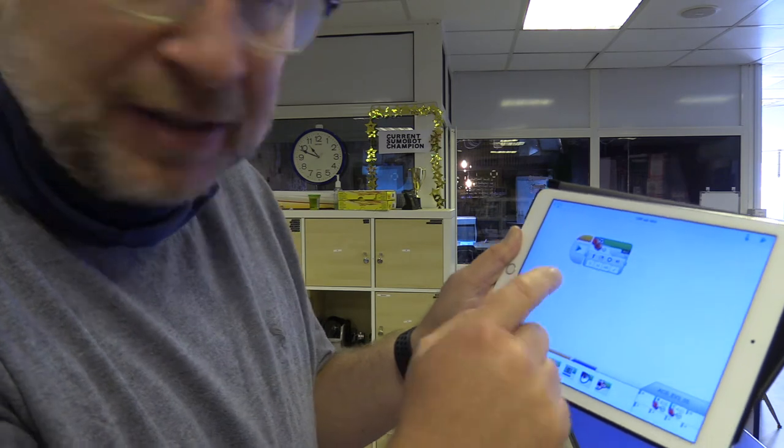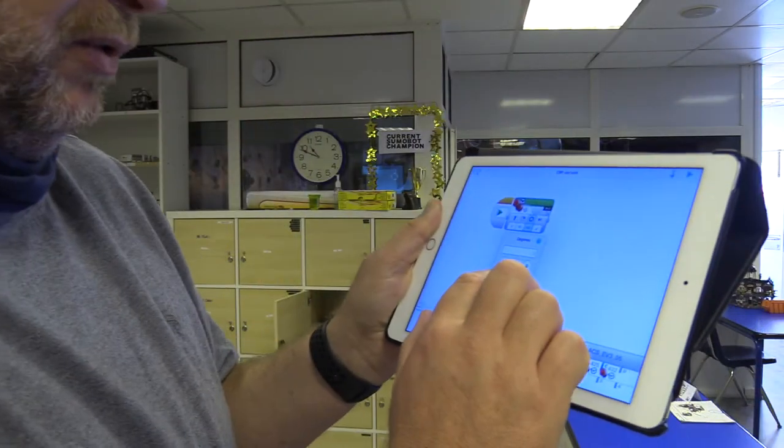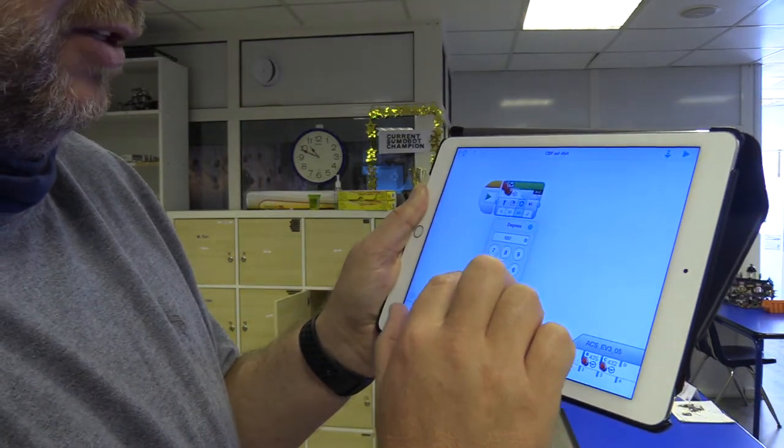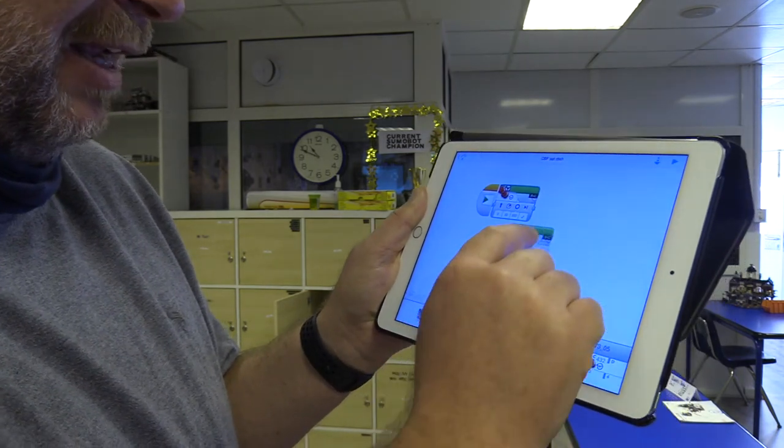So now it says 360, which would be one rotation, and if I go to my notes here I know that it's 692. So 692 degrees. Okay, so good, we got that one in.